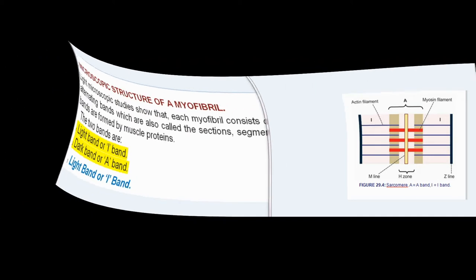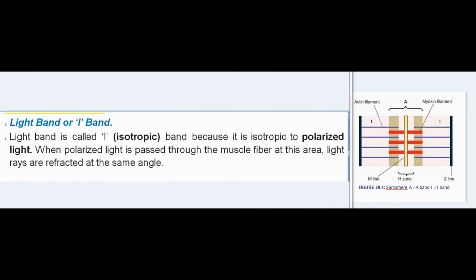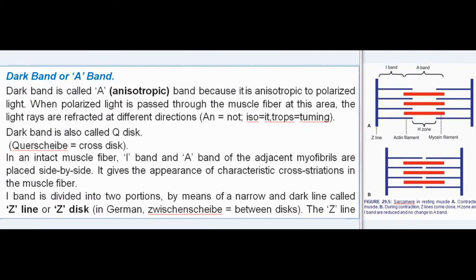Light band is called I (isotropic) band because it is isotropic to polarized light. When polarized light is passed through the muscle fiber at this area, light rays are refracted at the same angle. Dark band is called A (anisotropic) band because it is anisotropic to polarized light. When polarized light is passed through the muscle fiber at this area, the light rays are refracted at different directions. Dark band is also called Q-disc (Querscheibe = cross disc).